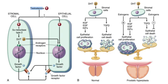Testosterone affects both stromal and epithelial cells. The epithelial cell is not as much involved in the pathogenesis of BPH — it is the stromal cell that is more concerned. When testosterone comes to the stromal cell, with the help of enzyme 5-alpha-reductase type 2 — which is present here; type 1 is present more in the liver — it is converted to dihydrotestosterone. This is much more active than testosterone in binding to androgen receptors. When it binds to androgen receptors, it stimulates growth factors, which results in the division of stromal cells and also epithelial cells.